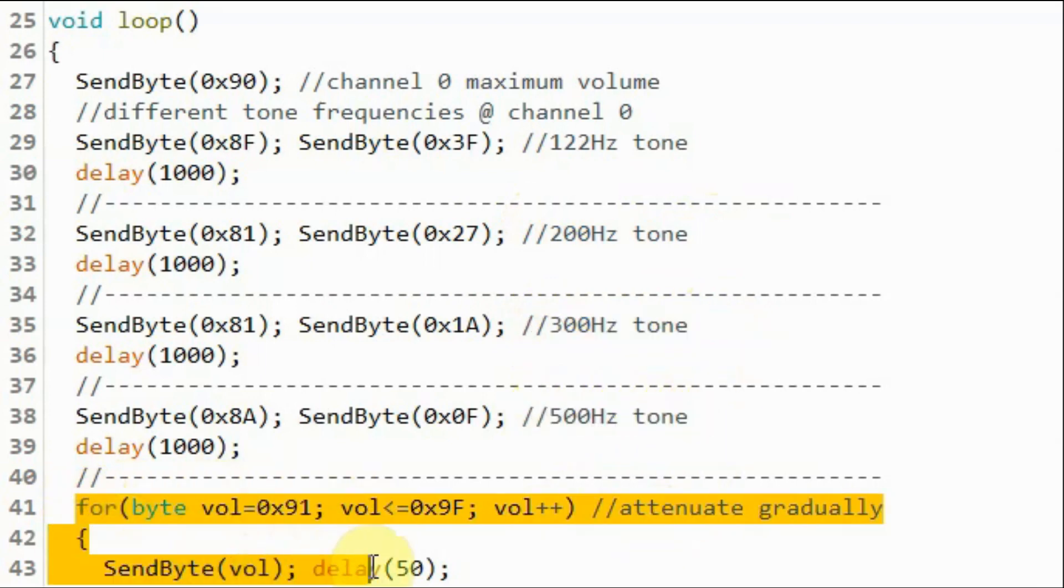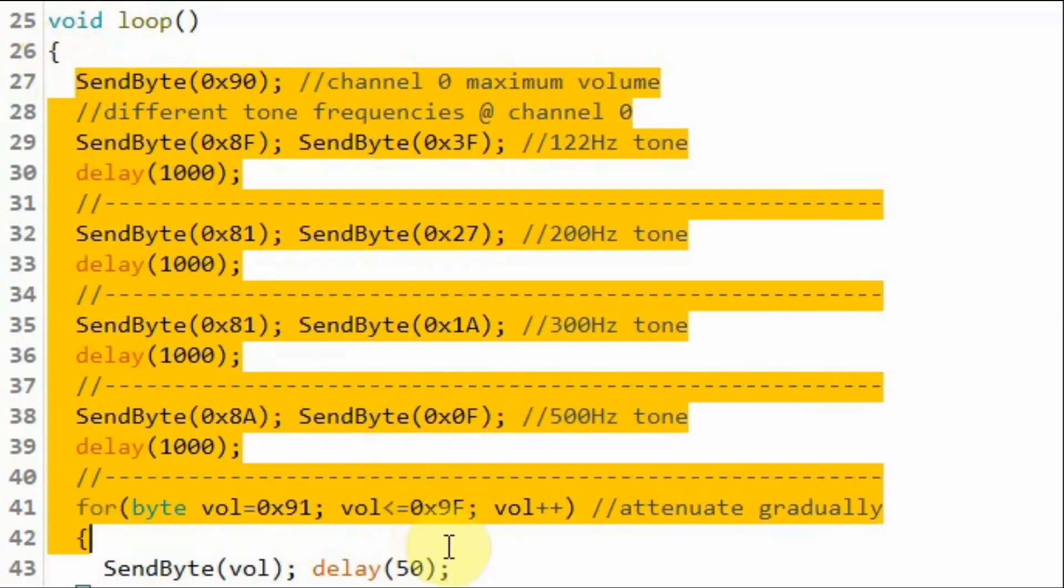And then using this for loop we gradually attenuate the volume of the 500 Hz tone until it is totally muted and the process is then repeated continuously.